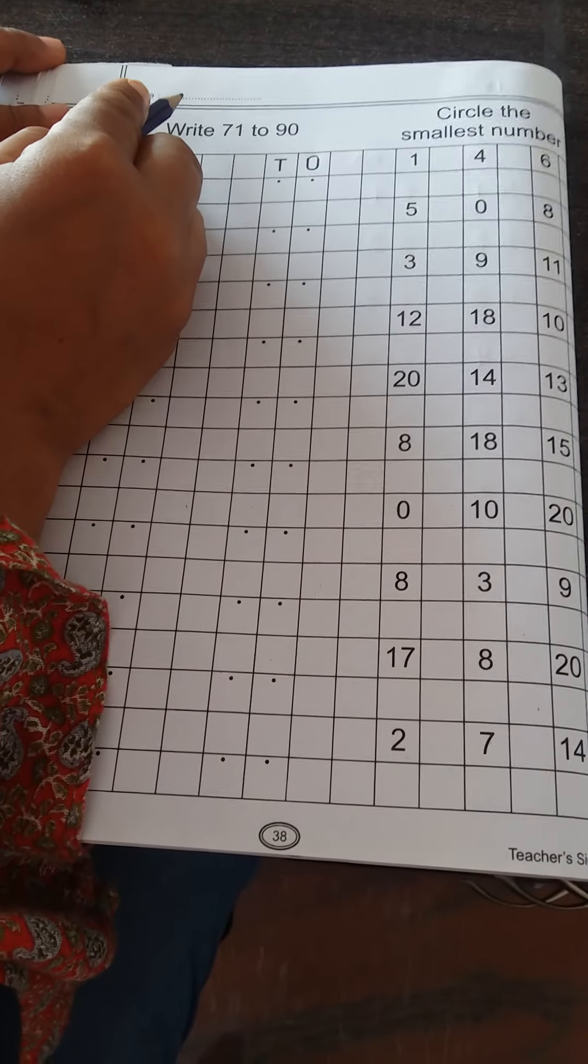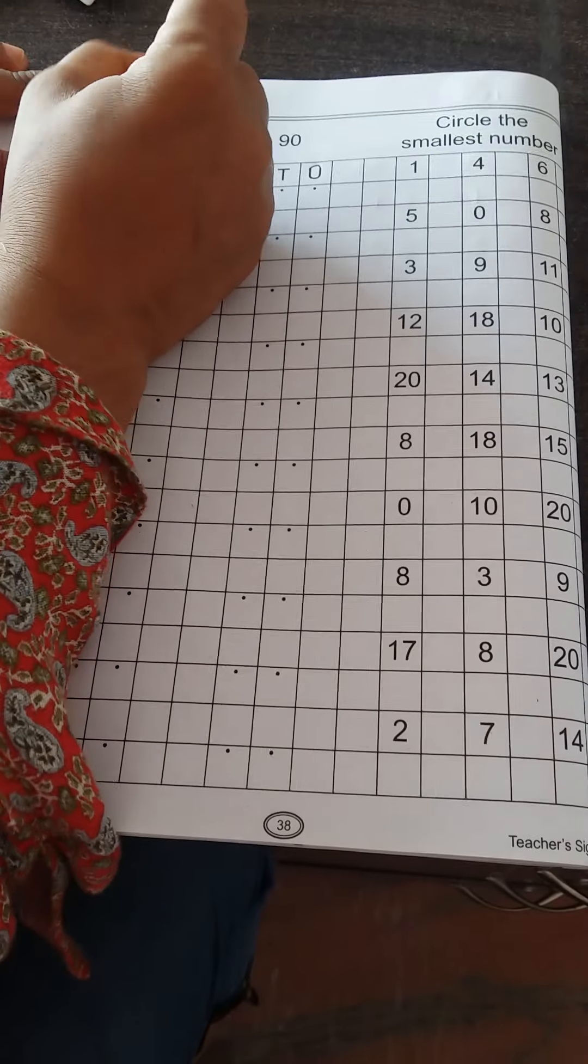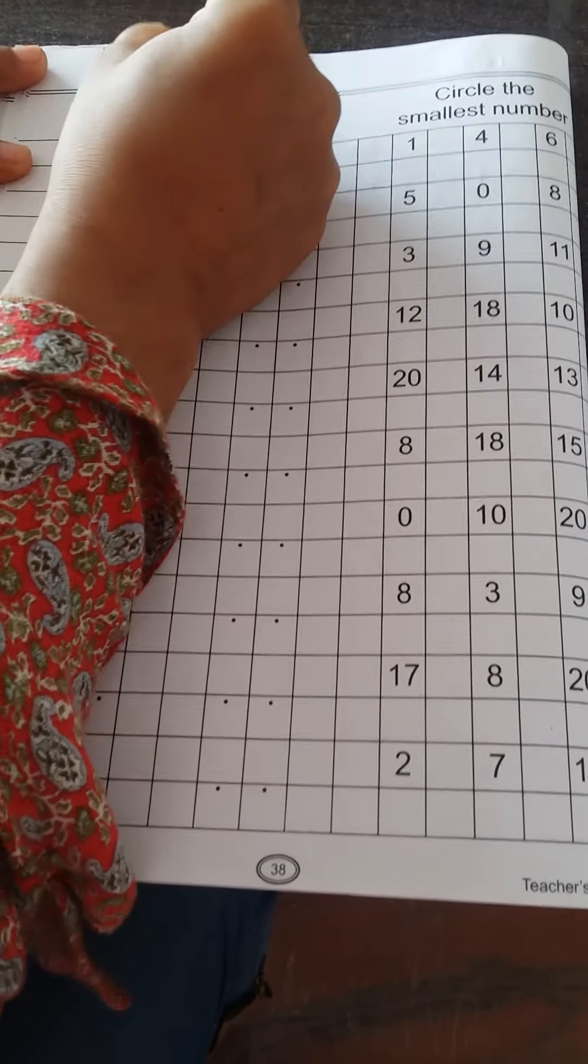First of all we will write here date. What is the date today? Today is 5 September 2020.